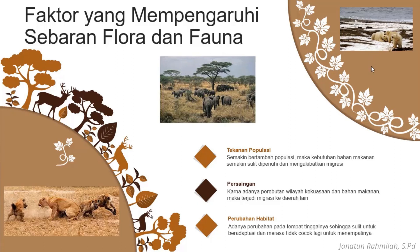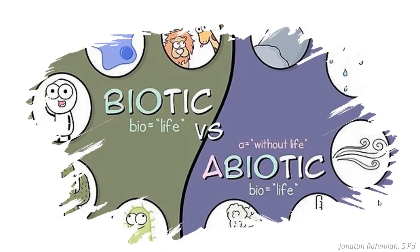Faktor persebaran flora dan fauna terbagi menjadi dua: biotik dan abiotik. Bio berarti hidup, berarti yang berkaitan dengan makhluk hidup. Kalau abiotik, berarti kaitannya dengan yang mati atau yang tidak hidup.